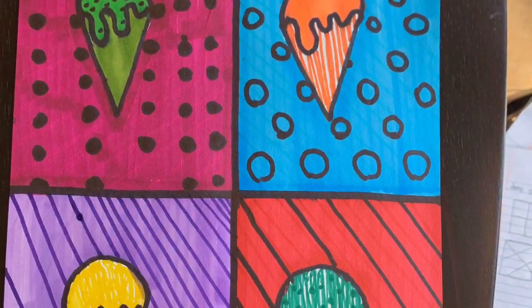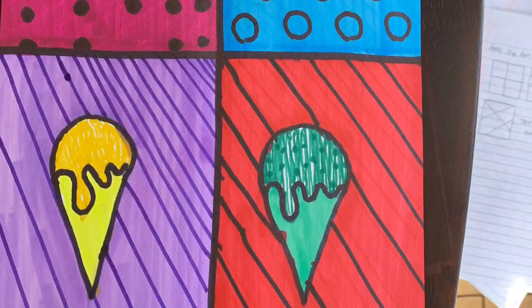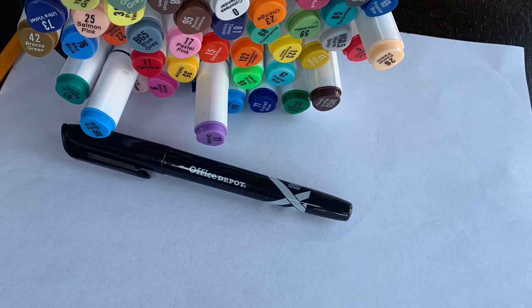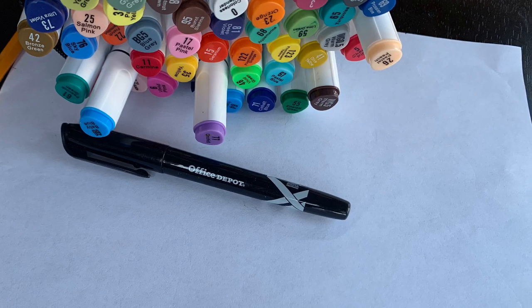We are going to draw an ice cream cone that has different flavors. Let's begin. For this project, you will need a white piece of paper, a black marker, and other colored markers.